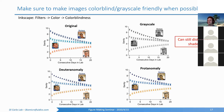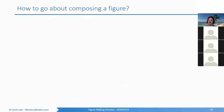That was an overview of how to rationale through a single figure. Now I want to discuss how you would compose an entire figure that includes multiple components — schematics, data, experimental images. I'll go through the process with an example.